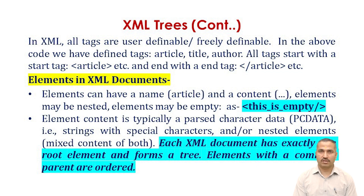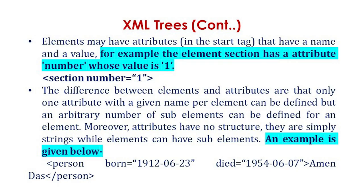Each XML document has exactly one root element, which forms a tree structure. Elements with a common parent are ordered. Elements may have attributes in a start tag, having a name and a value. Each element should have a name or ID and a value; if an element has no value, it is called an empty element. For example, the element 'section' has an attribute 'number' whose value is '1'.